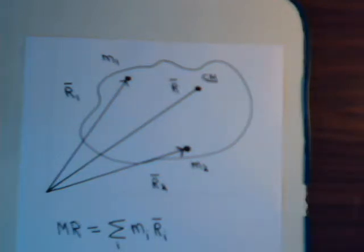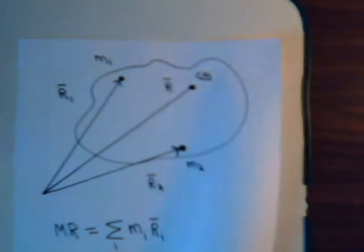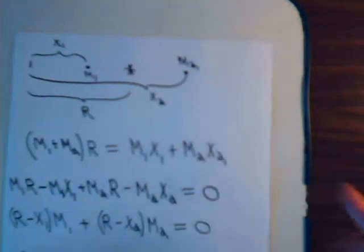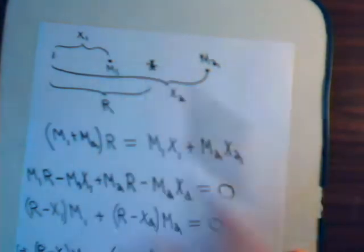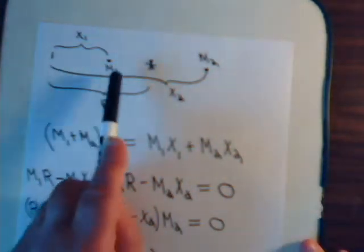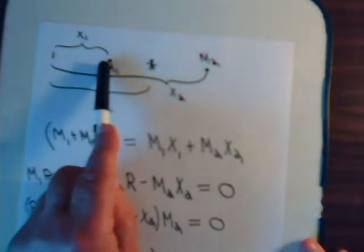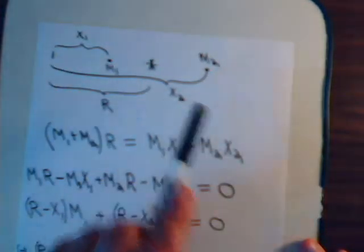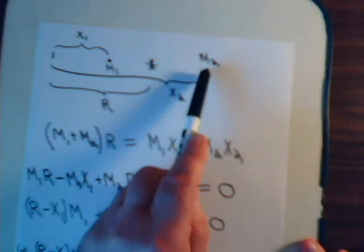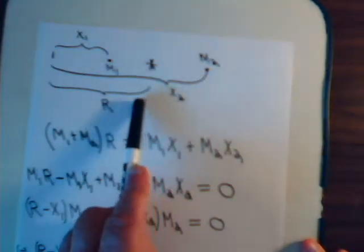Now, to understand some of its properties, let's just take a system where we have only two particles to consider. Here's particle M1, here's particle M2. Somewhere between is going to be a center of mass. And M1 is a distance x1 from this origin, so this would be its position vector. M2 is a distance x2, and the center of mass is a distance r.